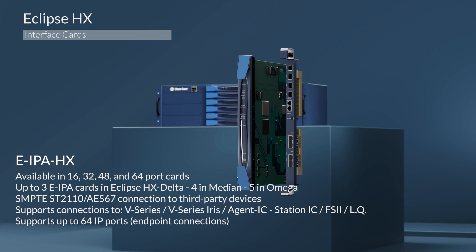Also supporting silence suppression on all Agent IC clients. Switch connections to V-Series and V-Series Iris panels, Agent IC mobile app, Station IC, Freespeak 2, and LQ Series devices. With software-definable port configuration to support multiple IP connections and standards, which support up to 64 IP endpoints, and an additional 64 Freespeak 2 IP transceivers.